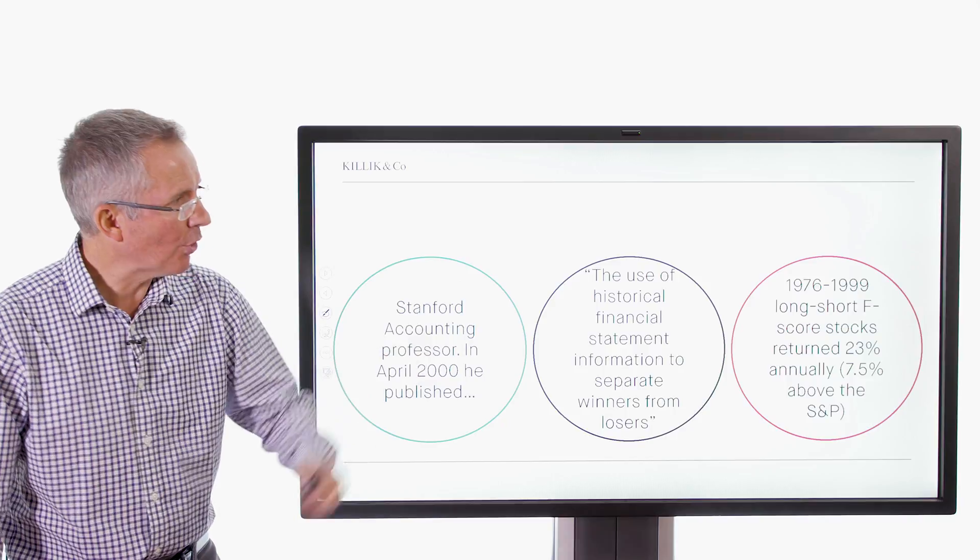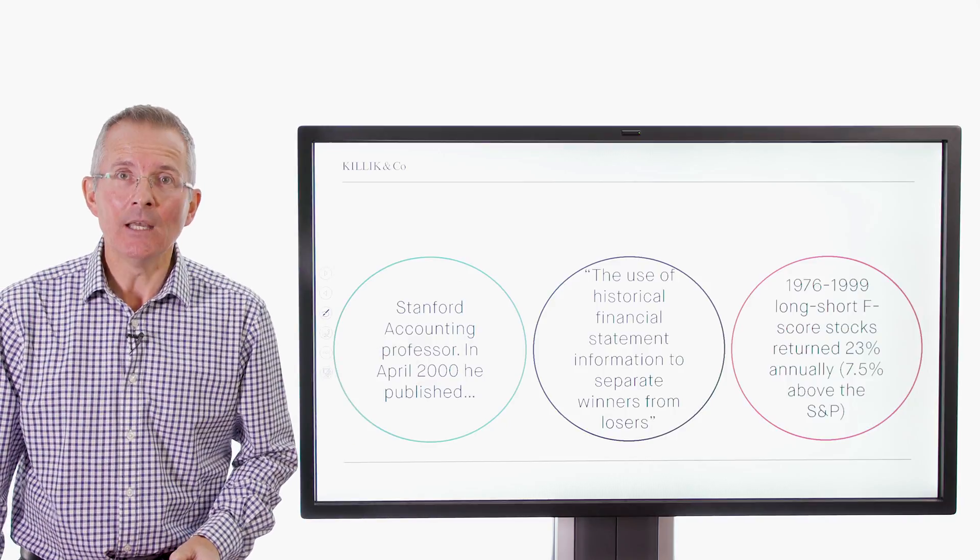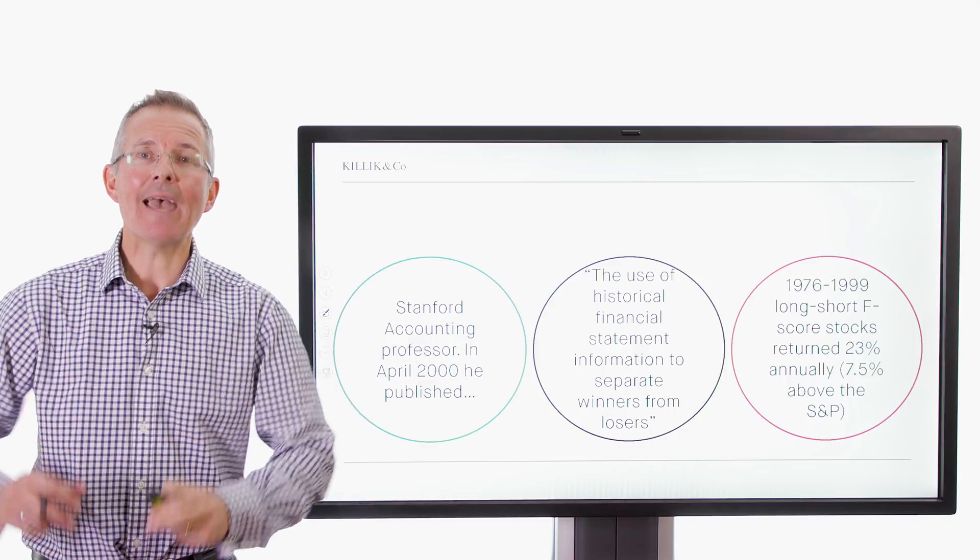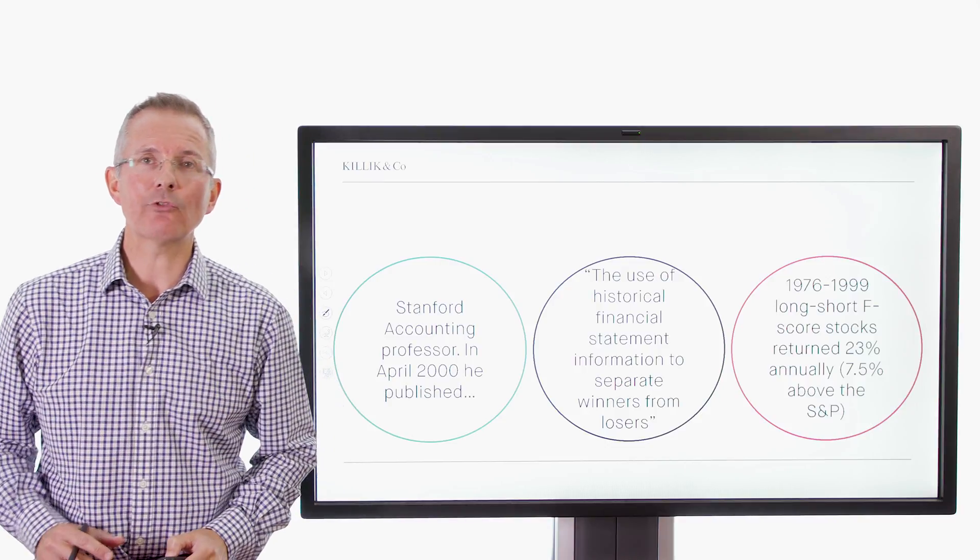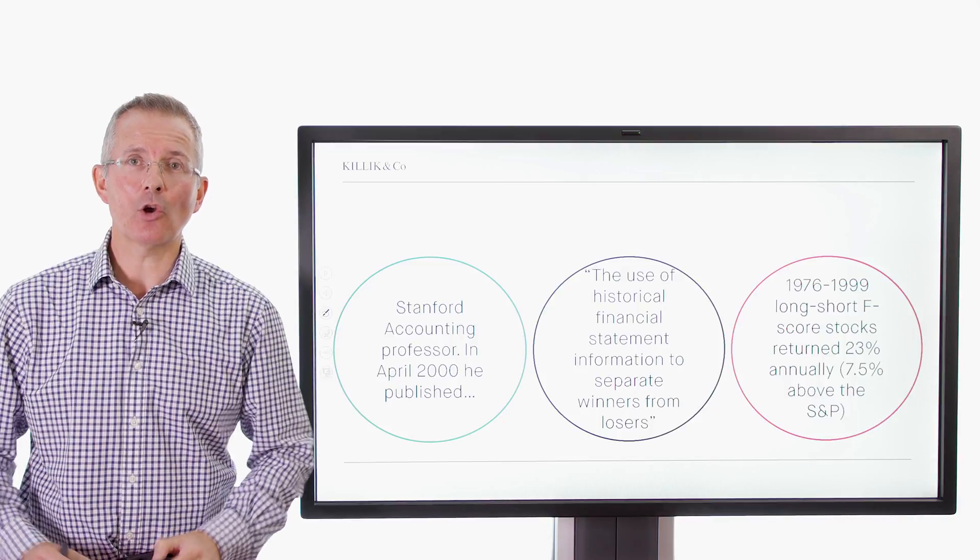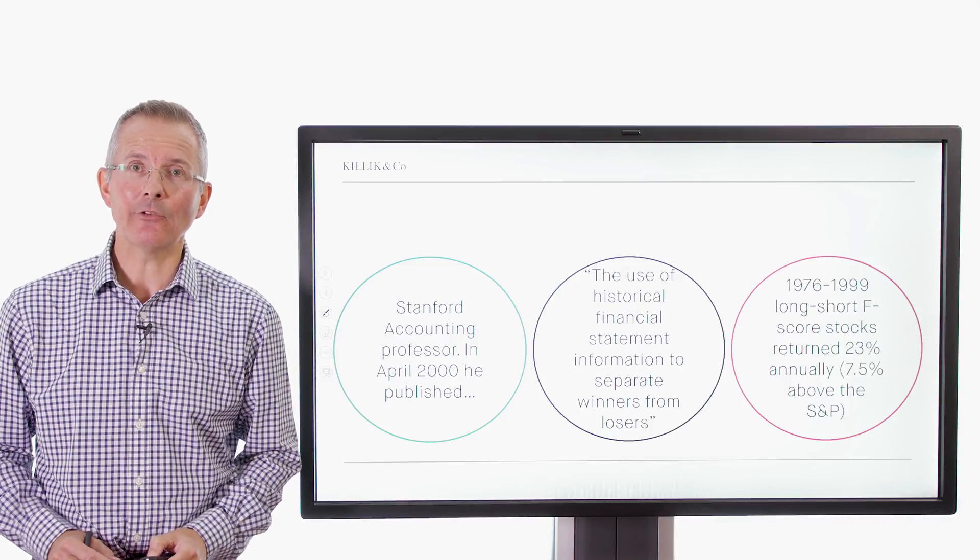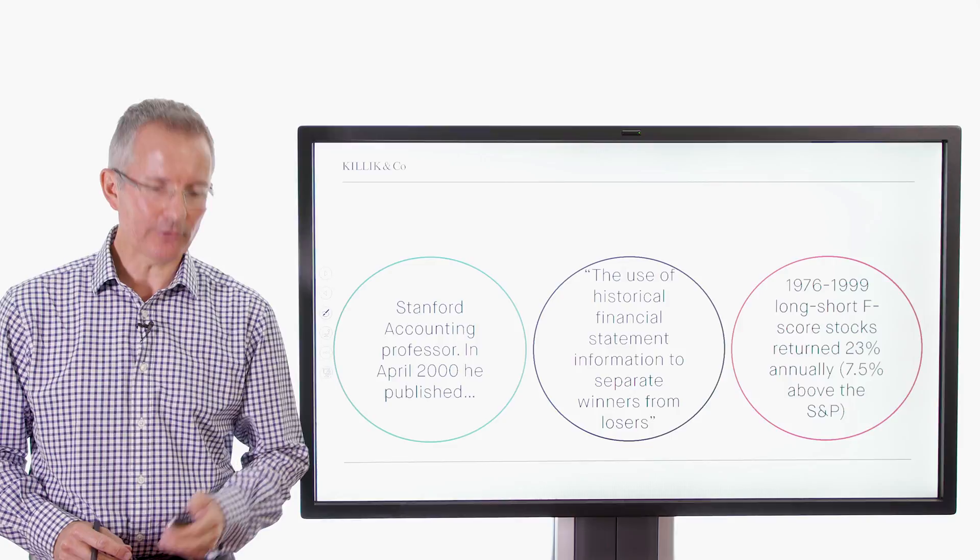Now, if you're wondering what on earth a long short F-score strategy might be, essentially we're going to cover that in a moment. It's buying high F-score stocks and selling or shorting low F-score stocks. Well, there we have it. Let's take a look at what the F-score actually is and then consider whether there's something in this for private investors.